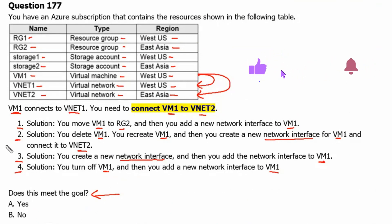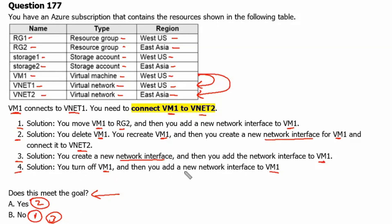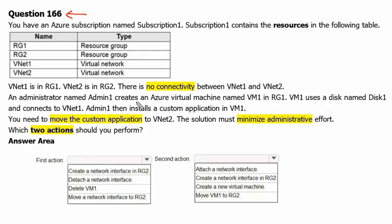Therefore, if solution 1 appears — move VM1 to RG2 and add a new network interface — this will not solve the problem, so the answer is No. If solution 2 appears — delete VM1, recreate VM1, create a new network interface and connect to VNet2 — the answer is Yes. For solution 3 — create a new network interface and add it to VM1 — the answer is No. For solution 4 — turn off VM1 and add a new network interface — the answer is also No. Previously we attended a similar question where we needed to move a custom application from VNet1 to VNet2, and the answer was to delete the VM, keep the hard drive, and create a new VM connected to VNet2.